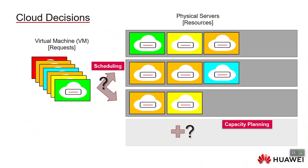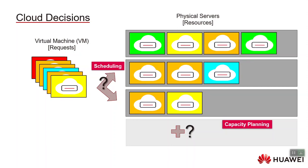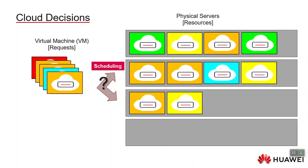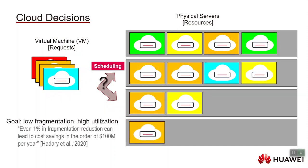The motivation for this work is to improve decision making in large compute clouds like the cloud we operate with Huawei Public Cloud. There are many decisions you have to make: where to place incoming virtual machine requests onto physical servers, and whether you need to add more physical servers. If you don't do a good job placing VMs or add too much capacity, you'll have low utilization and high fragmentation. Hadari et al. report that even one percent in fragmentation reduction can lead to cost savings of around 100 million dollars per year for Microsoft Azure.